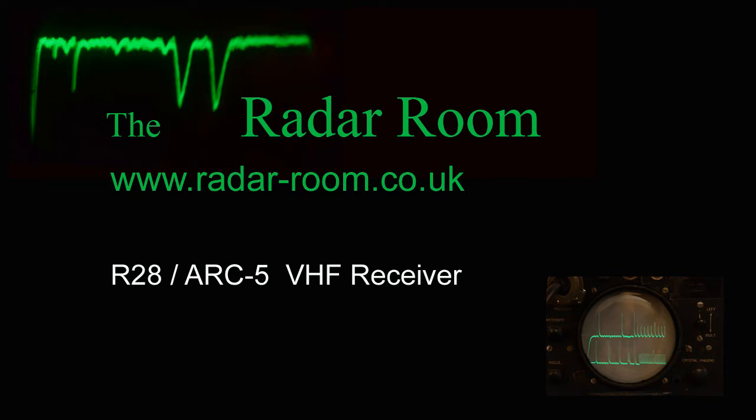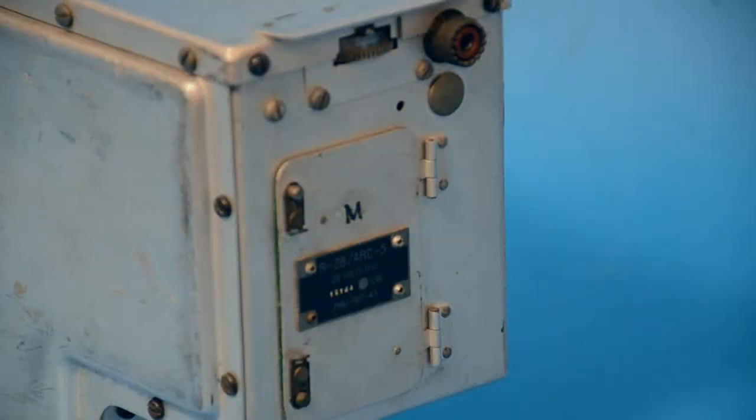The R-28 ARC-5 model was a VHF device which was mainly used for short-range aircraft to aircraft or aircraft to ground communications.